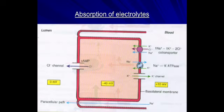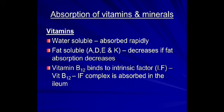Electrolytes are absorbed via sodium-chloride co-transporters and sodium-potassium transporters in a secondary active transport process; chloride then enters from the lumen into the blood via chloride channels, with paracellular pathways also involved. Water-soluble vitamins are absorbed rapidly, whereas fat-soluble vitamins A, D, E, and K decrease in absorption if fat absorption decreases. Vitamin B12 binds to intrinsic factor, and the B12-intrinsic factor complex is absorbed in the ileum; failure results in megaloblastic anemia.